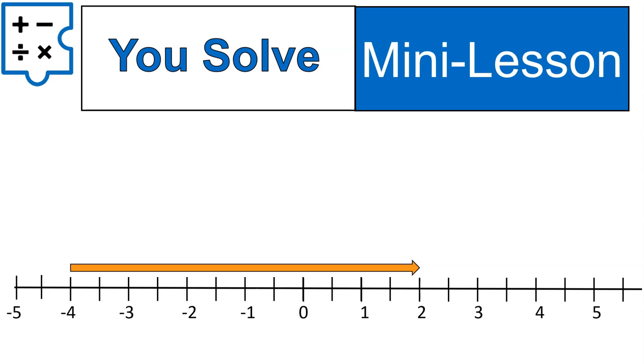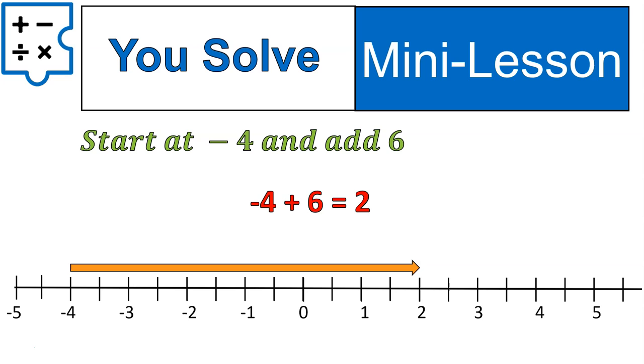All right. Now I've got one for you to solve. This is my question here. I've represented it with an arrow. How would I write that as an addition expression? And how would I solve it? Go ahead and try that out. What do you think that represents? This one represents starting at negative four and adding six. In other words, we say negative four plus six equals two. Is that what you had?